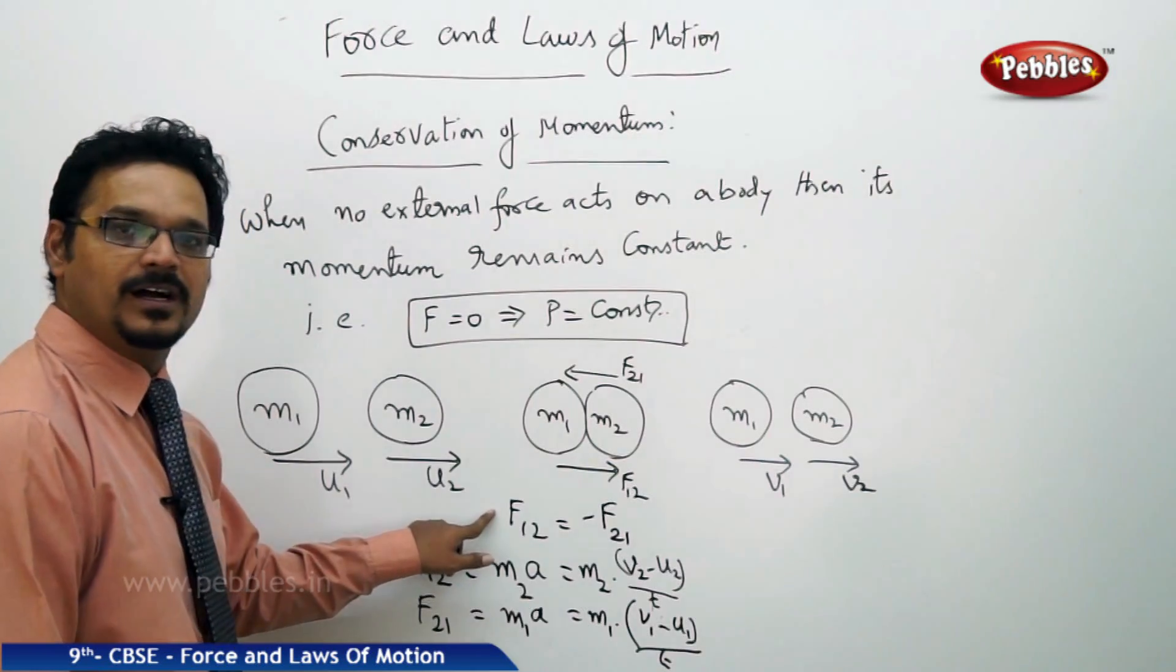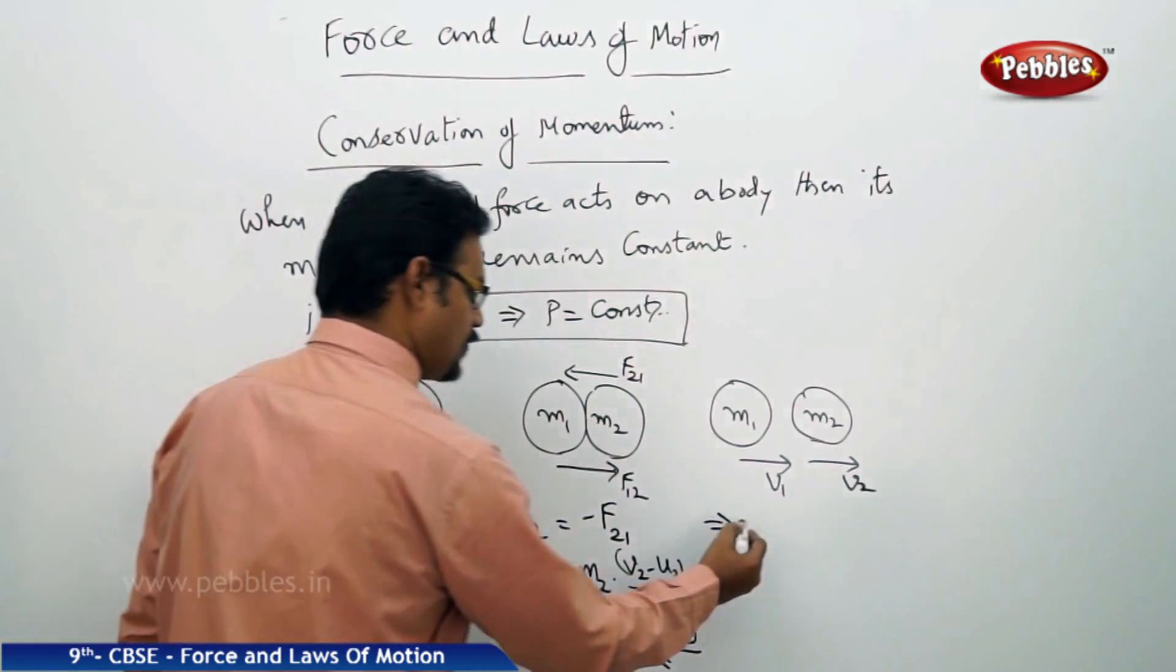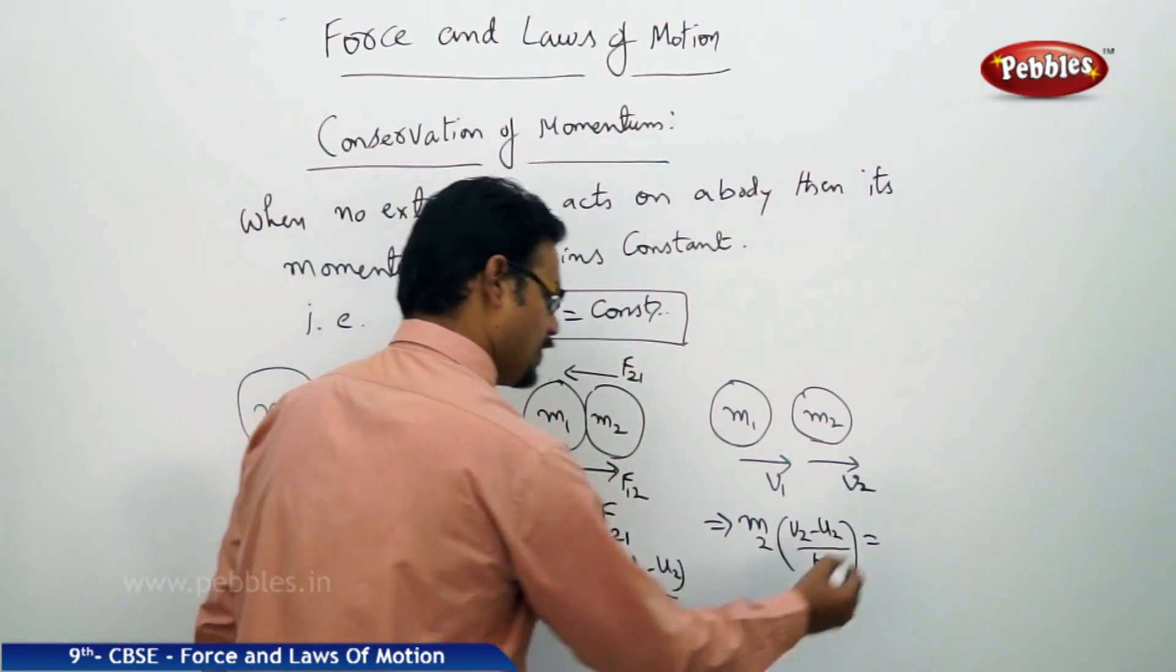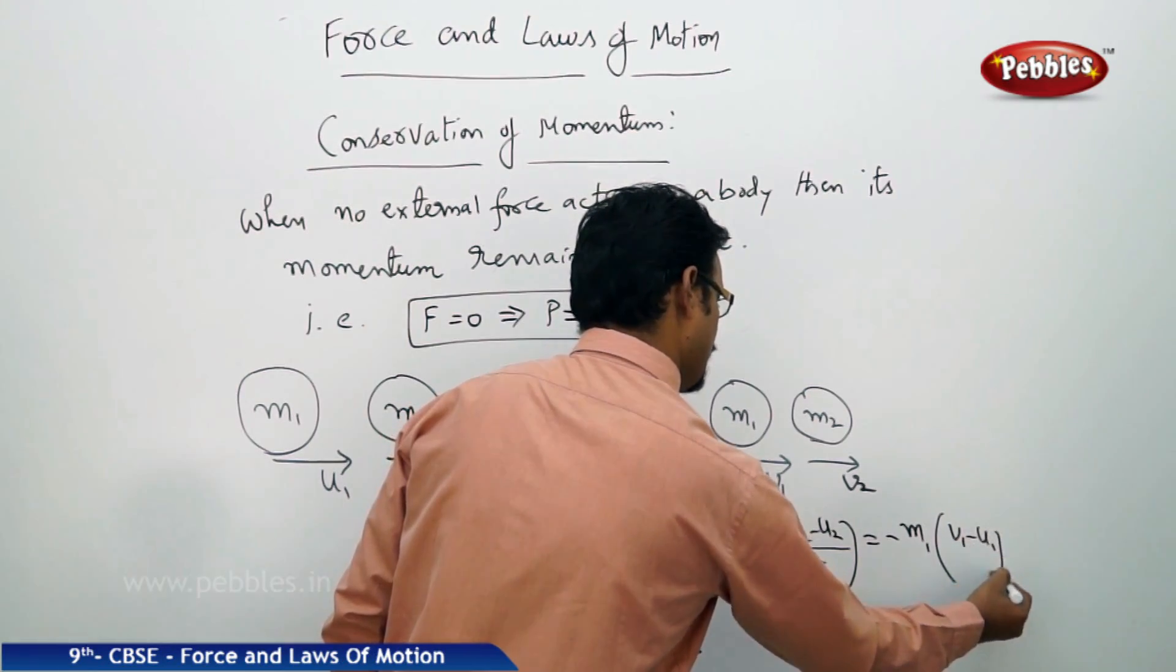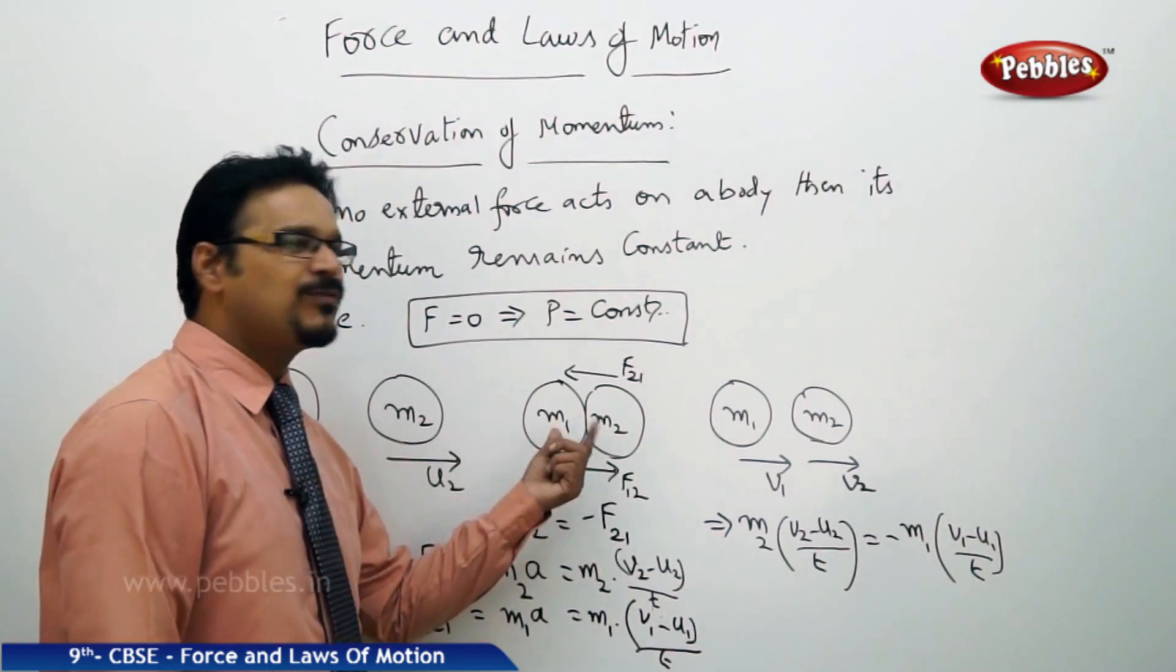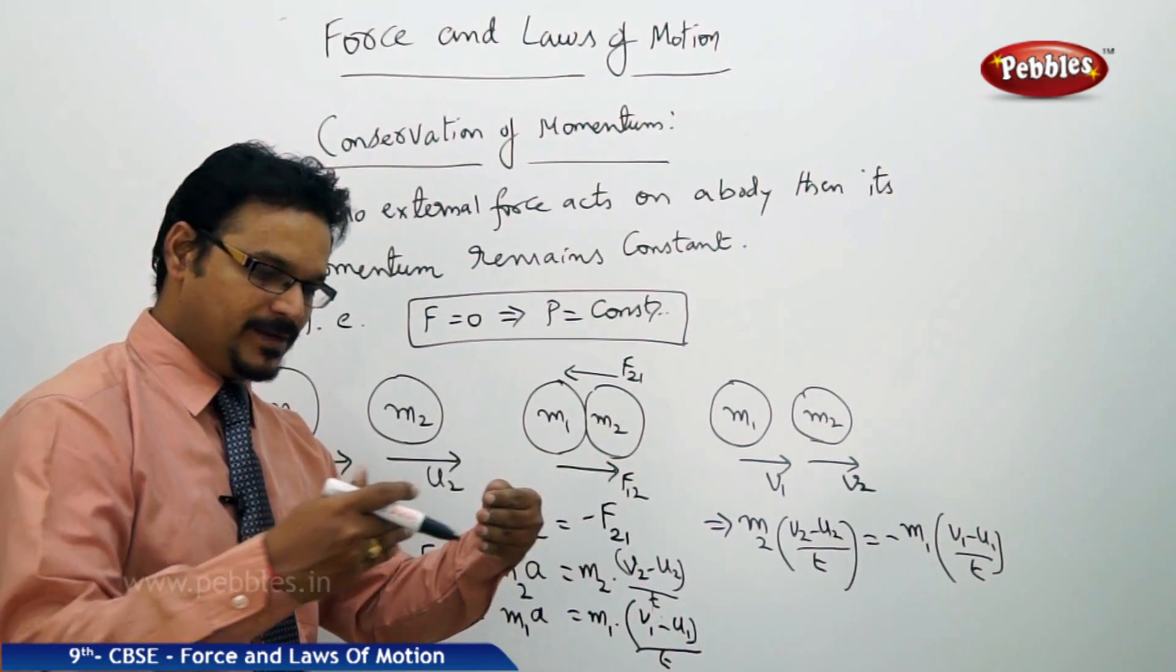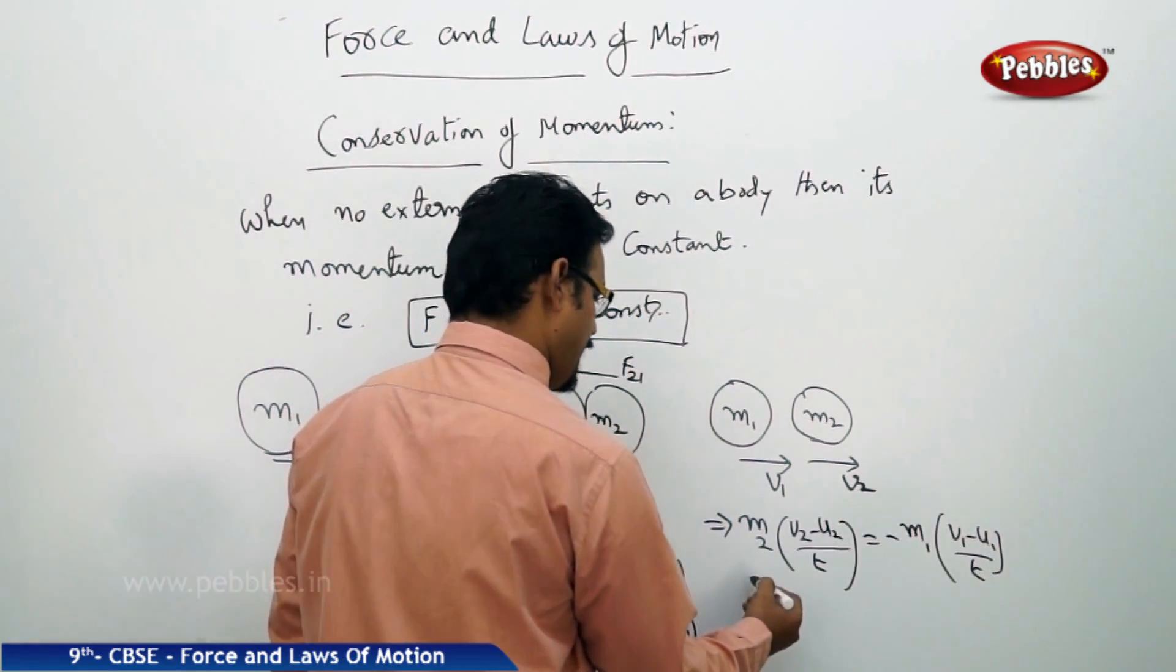These two expressions now apply here. So I am rewriting: m2 into v2 minus u2 by t equals to minus m1 into v1 minus u1 divided by t. See carefully, t is nothing but time of collision. Now at the time of collision, same for m1, m2 mass, because they are simultaneously hit with each other. So t is cancelled.